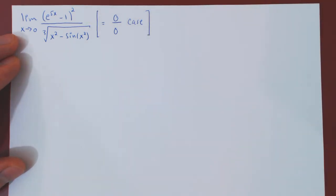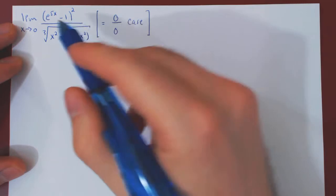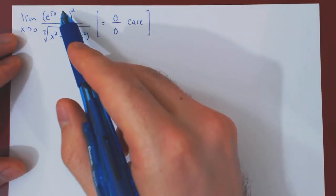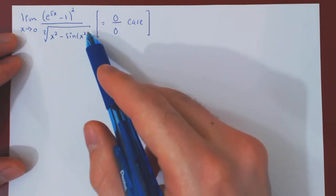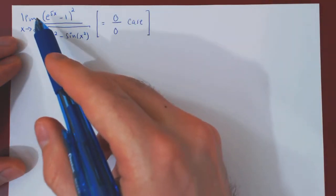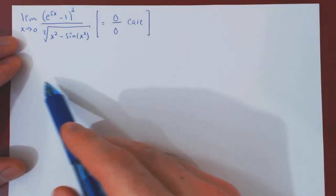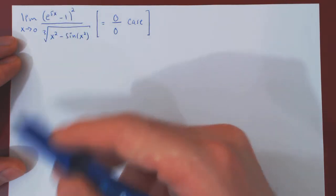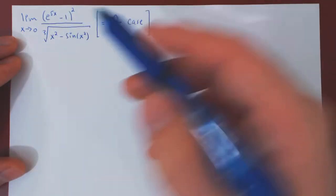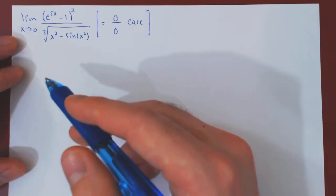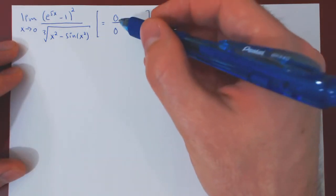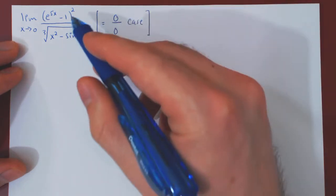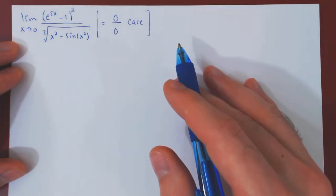On the surface, it looks like we can apply L'Hôpital's rule. But if you do apply L'Hôpital's rule, after you differentiate the numerator and denominator, you will find that the new limit is even worse than the original. And if you try to apply L'Hôpital's rule again, things will only get worse. So even though it may look like L'Hôpital's rule is a good idea, it actually is a terrible idea.